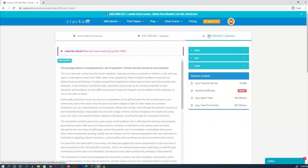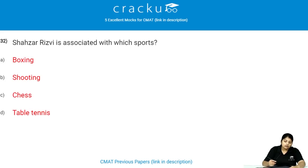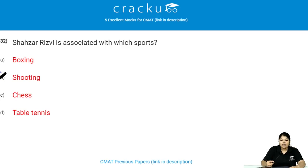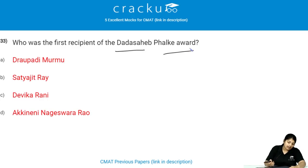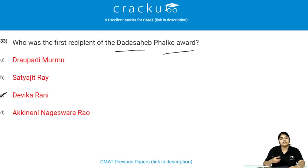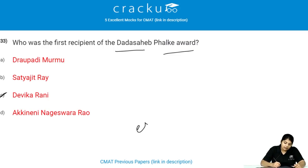Sajan Rizvi is associated with which sport? He is associated with the sport of shooting and is an Indian professional shooter. Who was the first recipient of the Dadasaheb Phalke Award? The first recipient of the Dadasaheb Phalke Award is Devika Rani. This is the highest award in terms of cinema and it was established in the year 1969.